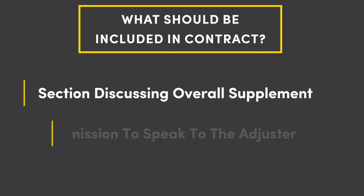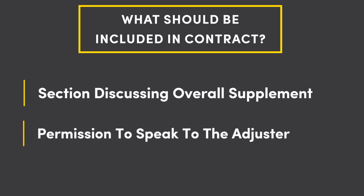The second part is permission. You want to make sure there's a section with the homeowner giving you the contractor permission to speak to their adjuster, and vice versa — you want the adjuster to have permission to speak to you. Not only does this help through the supplementing process, it also helps at the very end when you've come to an agreement and need to get a copy of the insurance paperwork. Quite often we come to an agreement with an adjuster and they say they'd love to send it to you but simply don't have permission. This will help you be more efficient and speed up the supplementing process.